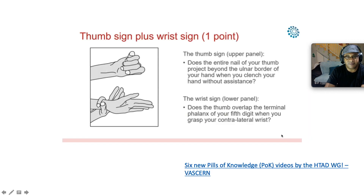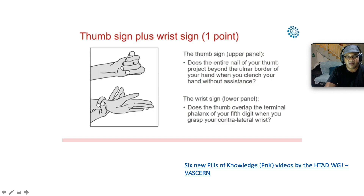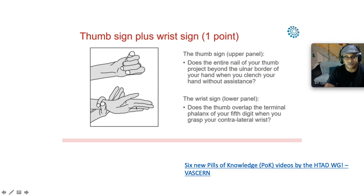This is the thumb plus the wrist sign. If you've got both, you get three points; if you've got either one, you get one point. On the upper panel, we see the thumb sign — you ask the patient: does the entire nail of your thumb project beyond the ulnar border of your hand when you clench your hand without assistance? The wrist sign: does the thumb overlap the terminal phalanx of your fifth digit while you grasp your contralateral wrist? Those are the thumb sign and wrist sign respectively.